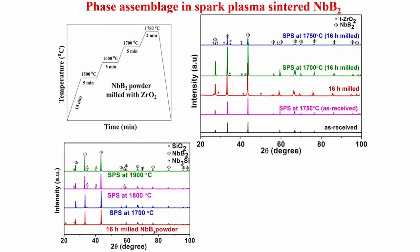We heat it up to 1500°C at 100°C per minute heating rate, then hold it for 5 minutes at 1600°C, hold for 5 minutes at 1700°C, and finally hold at 1750°C for 2 minutes. So it is a four-stage multi-stage sintering where the powder compact is held at 1500, 1600, and 1700°C for 5 minutes each before the final sintering temperature of 1750°C for 2 minutes, before cooling to room temperature. When spark plasma sintered at 1750°C, the niobium boride with zirconia-milled powder shows a clear presence of tetragonal zirconia.